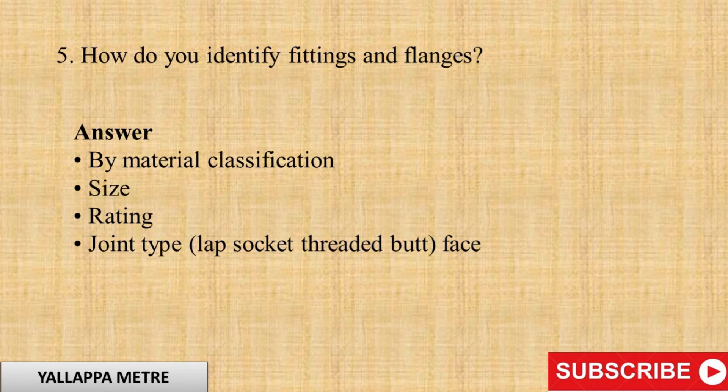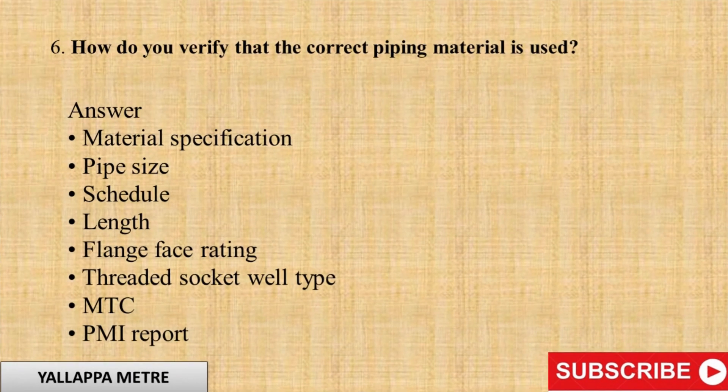Question 5: How do you identify fittings and flanges? Answer: By material classification, size, rating, joint type — lap, socket, threaded, butt — and face.